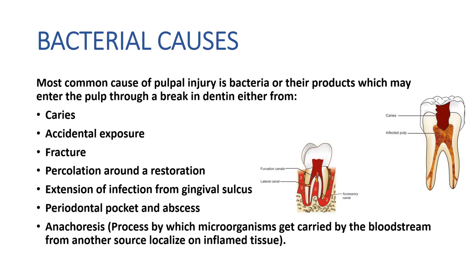The last causes are bacterial causes. In 1894, W.D. Miller suggested that bacteria were a possible cause of inflammation in the pulp, and bacteria are the most common cause of pulp injury. Bacteria or their products may enter the pulp through a break in the dentine caused by caries, accidental exposure, fracture, or percolation around a restoration.